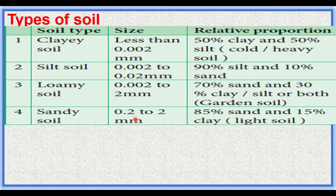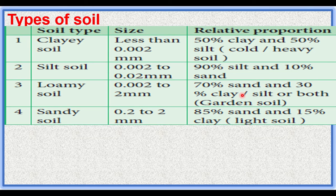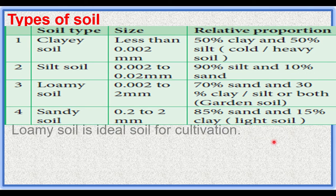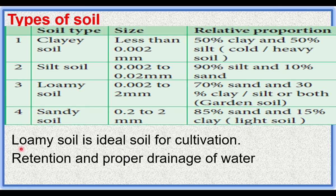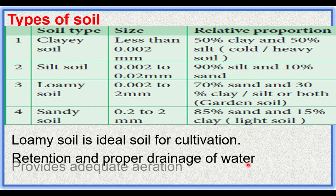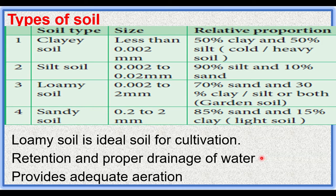Sandy soil has a particle size of 0.2 to 2 mm with large particles, composed of 80% sand and 50% clay. This soil cannot hold water — it has poor water holding capacity. Loamy soil is ideal for the growth of plants because it retains water, has proper drainage, prevents water stagnation, and provides adequate aeration due to its 70% sand content.